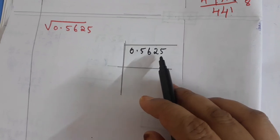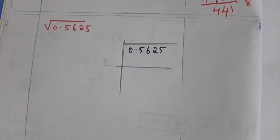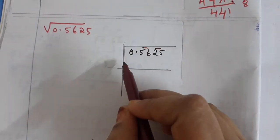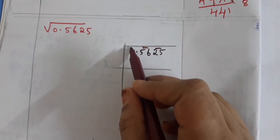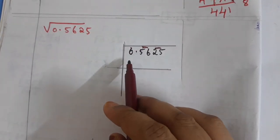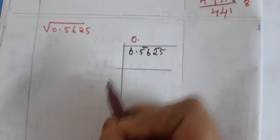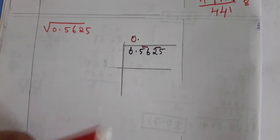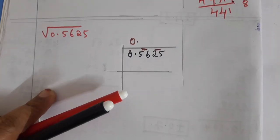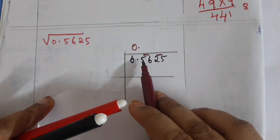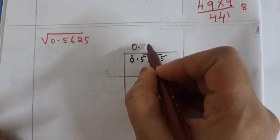Next question: find the square root of 0.5625. For decimal numbers, the step is the same — first group from the right side. This gives three groups: one group, one group, one group. The first number is zero, so zero times zero is zero — no need to write it, directly write zero point. Now consider 56.